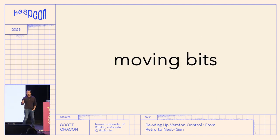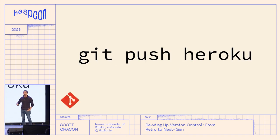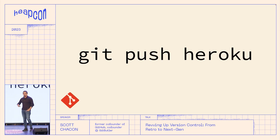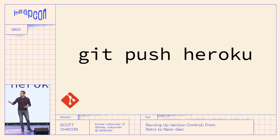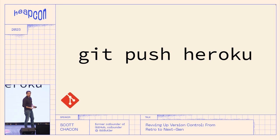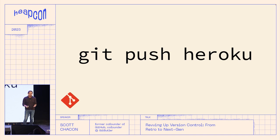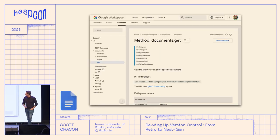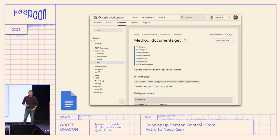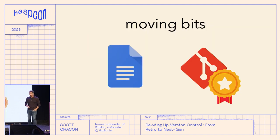The last one is moving bits — we use Git to move data around. If you push to Heroku, push to GitHub, you're not SCPing or FTPing files anymore. Most people are moving code from one computer to another for CI, deployment, or whatever, using Git as a transfer protocol. That has nothing to do with version control really — it just exists so we can do these workflows. Google technically has an API but it's horrible. If anybody's ever tried to use Google APIs for anything, they're awful. So I'm going to give this one to Git as well.